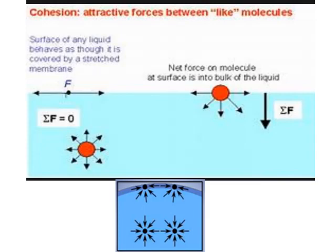Here we see that a molecule in the bulk is attracted by all surrounding molecules on different sides. But for a molecule on the surface, the net force is always acting downward, because there are no molecules above it to cancel the downward pull.